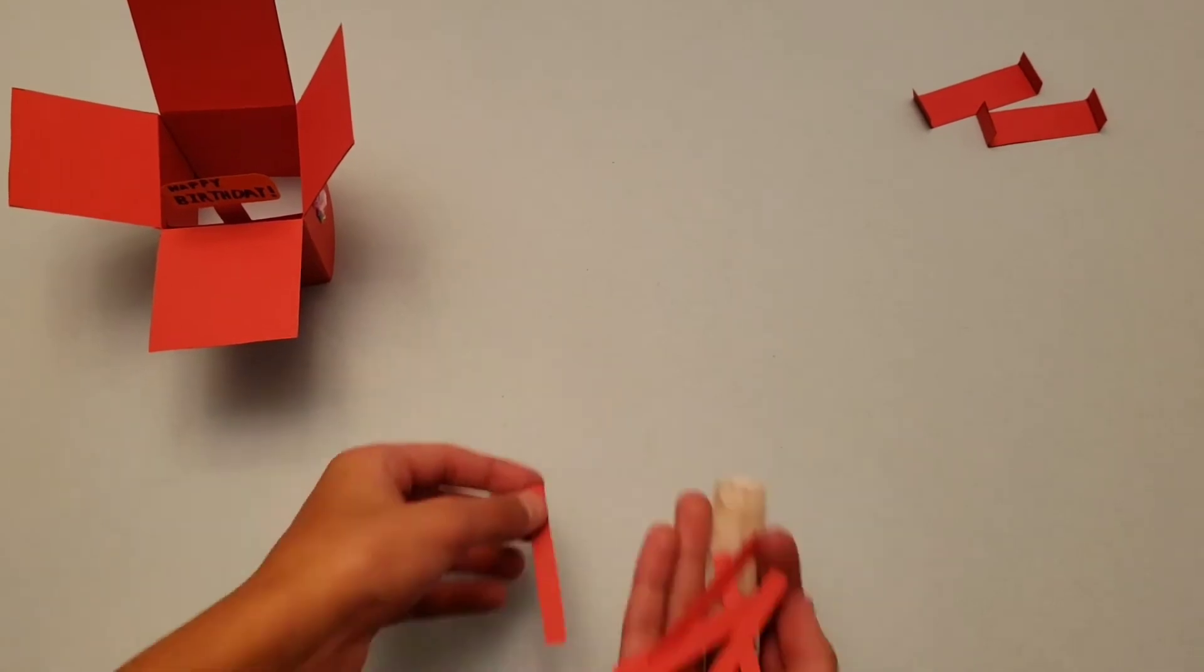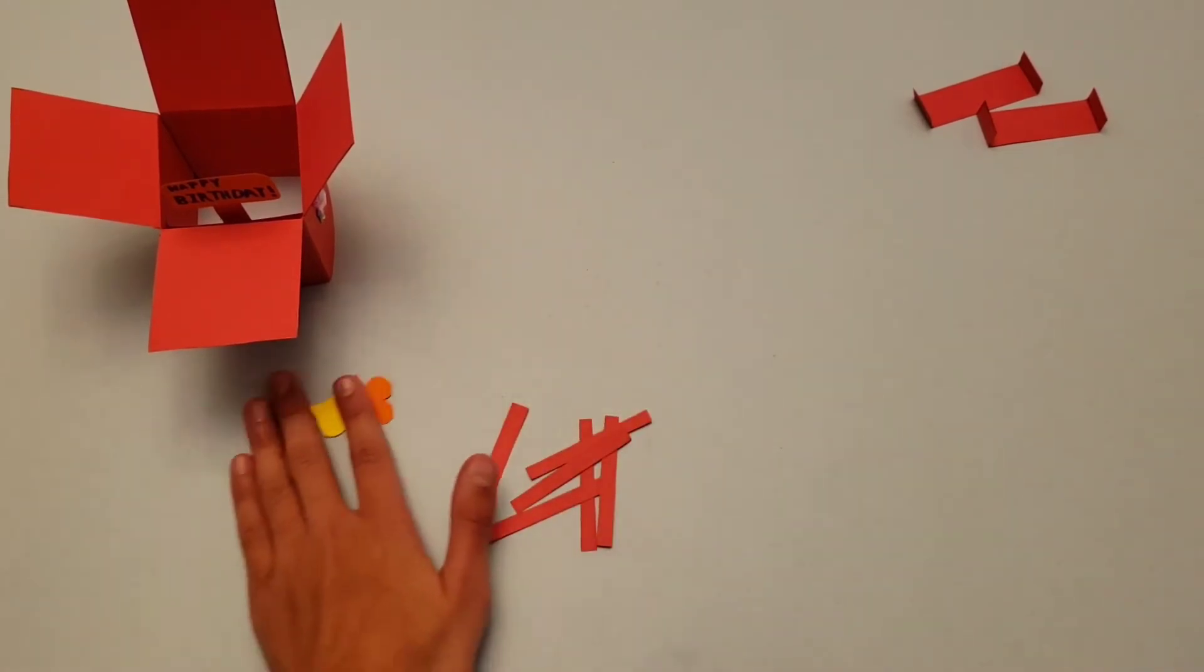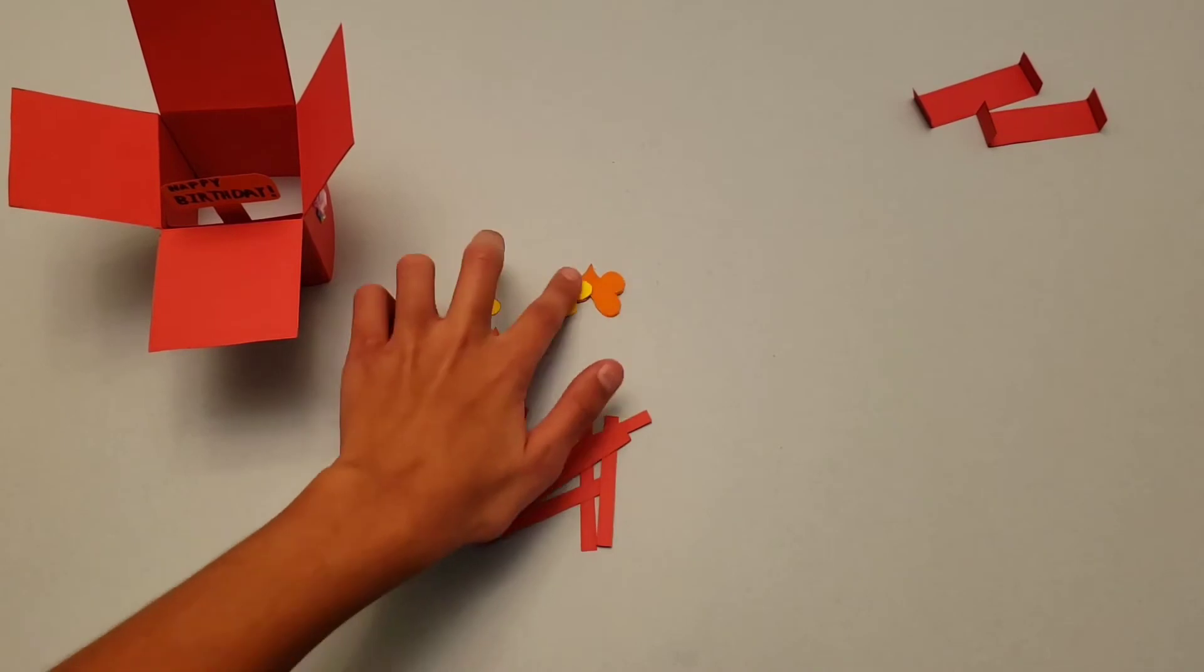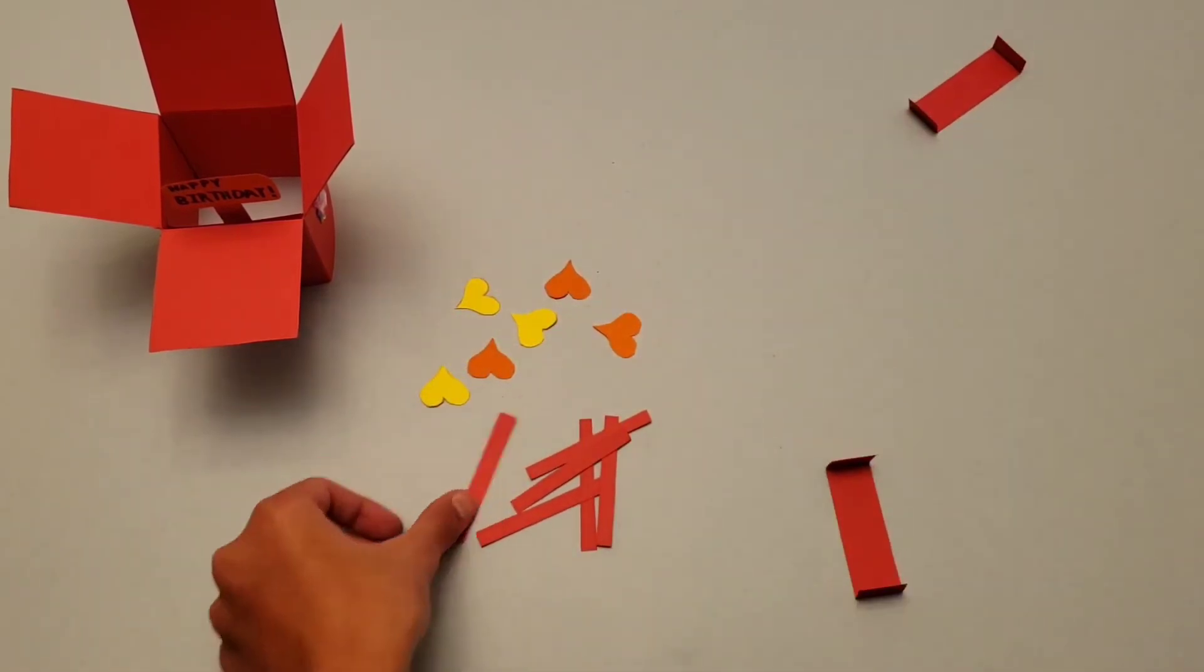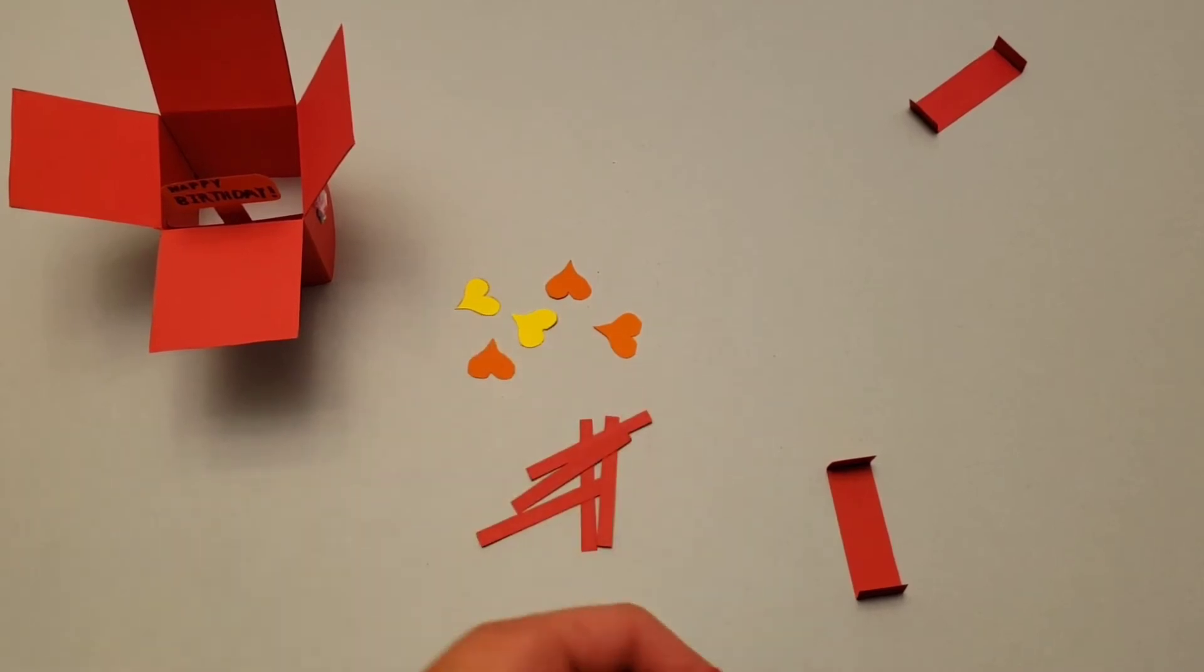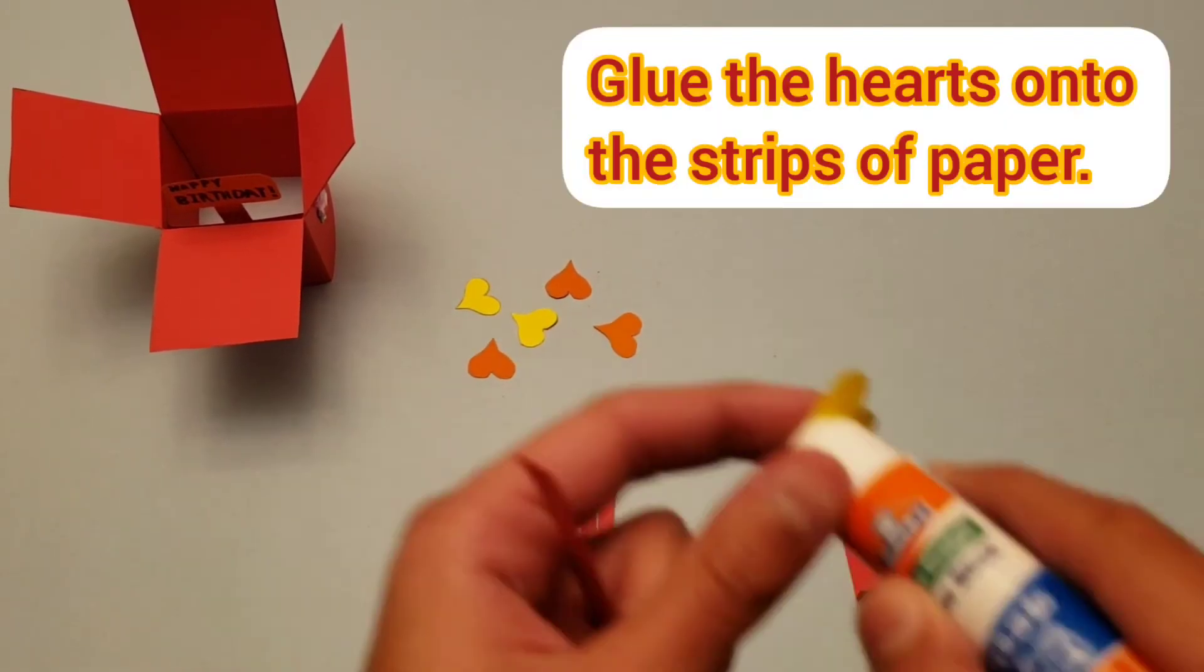Now cut out six taller strips of paper, and six hearts of whichever colors you want. And glue the hearts on the small strips of papers.